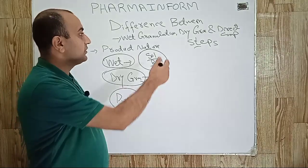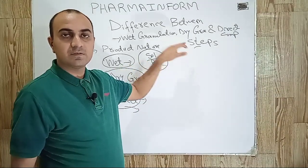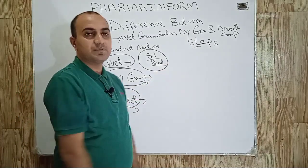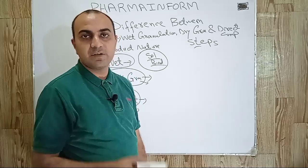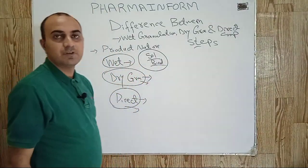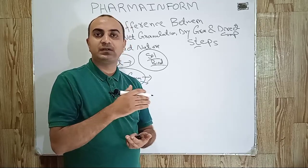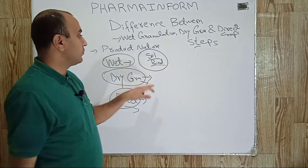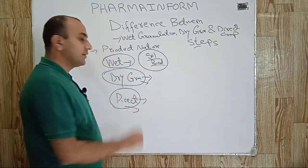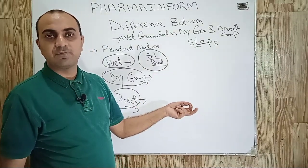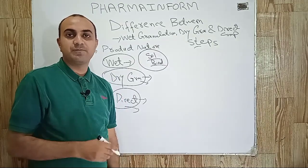Now let's discuss the steps for wet granulation, dry granulation, and direct compression. In wet granulation, the steps are: weighing, sieving, pre-mixing, kneading, sieving of wet mass, drying, sieving of dried mass, and final mixing. In dry granulation, we use weighing, sieving, pre-mixing, slugging, then screening, and final mixing — we do not use kneading, wet sieving, or drying. In direct compression, we use only weighing, sieving, and mixing.